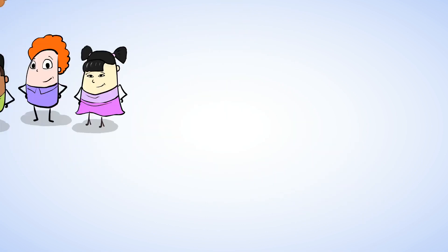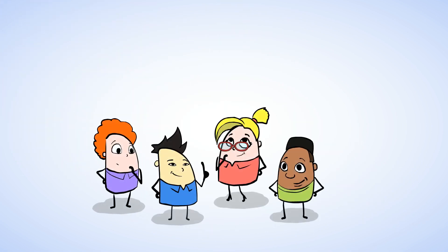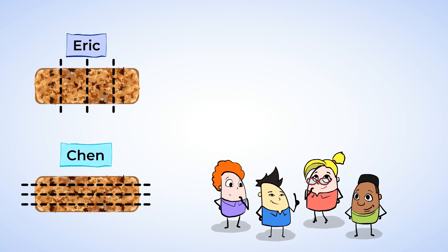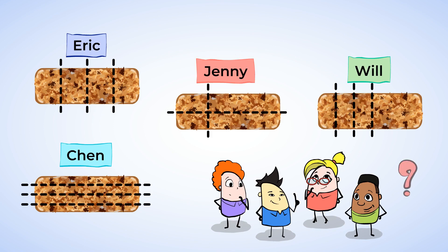Now Jenny wants to share with them too. Eric, Chen, Jenny, and Will have all decided to share a granola bar. They also drew up ideas for how to make four equal shares. Which ones actually show four equal shares? Look for the ones that have four equal pieces. Eric's diagram looks like all four pieces are equal, as does Chen's. But in Jenny's case, it looks like she has two big pieces and two small pieces — those aren't equal shares. And the same goes for Will: he has one big piece and three smaller ones. So Eric and Chen's ideas have cut the granola bars into fourths, and Jenny's and Will's did not.